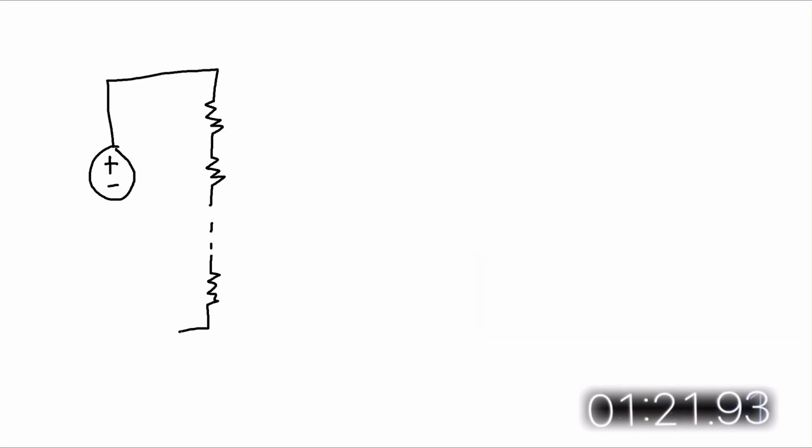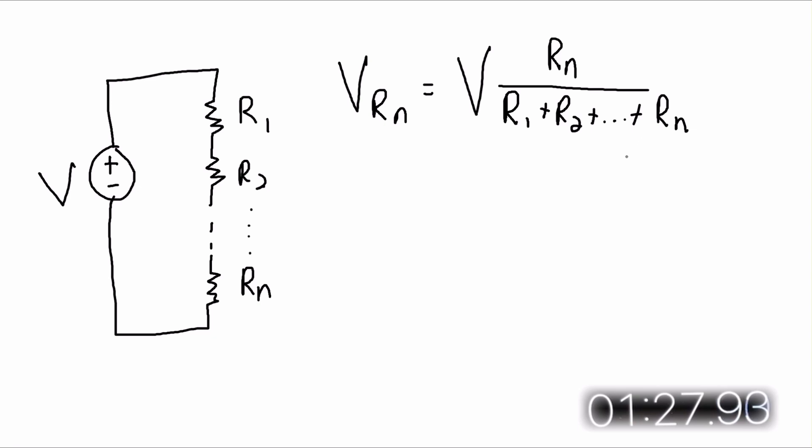Finally, let's look at a circuit with an arbitrary number of series resistors, R1 up to Rn. The equation for the voltage divider is essentially the same here. The voltage across any of the resistors is the total voltage times its resistance divided by the total resistance.